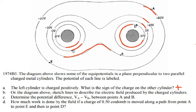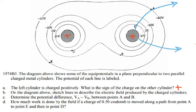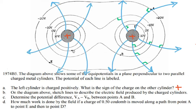For the next question, they ask us to sketch lines describing the electric field produced by the charged cylinders. When drawing electric field lines, they cannot cross. Since both charges are positive, the electric field lines go away from each positive charge. I draw them so that they form right angles with the equipotential lines everywhere, because electric field lines are perpendicular to equipotential lines.